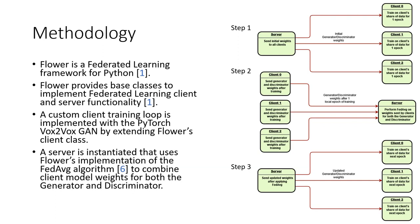Throughout training, typically in federated learning you're just sharing network weights for one network, but for this particular network, both the generator and discriminator weights are shared. The diagram to the right depicts the overall training process. Initially, the server sends out the same initial weights to the three clients used in this project. Each client then trains for one local epoch on the data and sends updated weights back to the server. The server performs federated averaging to combine those weights into one global generator and one global discriminator, and those global network weights are redistributed out to all three clients.